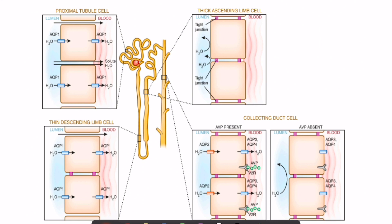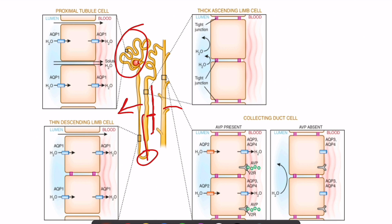There are four aquaporin channels specific for water movement: aquaporins 1, 2, 3, and 4. Aquaporin-1 is predominantly present in the proximal convoluted tubule and descending limb, continuously moving water out of the tubule to create a concentrated solution. The ascending limb is completely impermeable to water with tight junctions. This area can only be opened by the presence of vasopressin, which further concentrates the urine based on physiological signals.